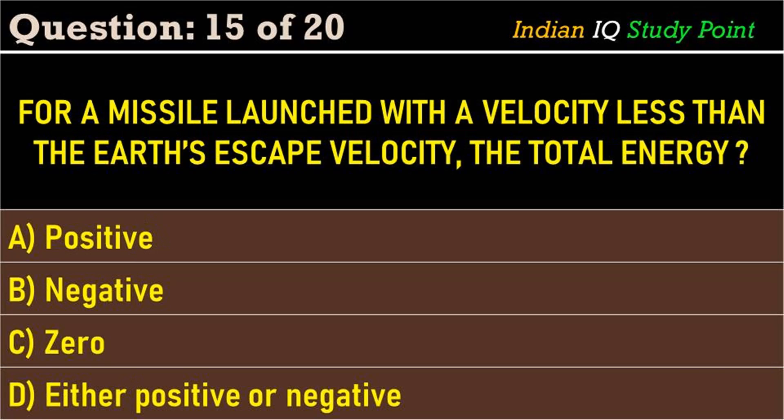Coming to the next question: for a missile launched with a velocity less than the escape velocity, the total energy is — option A: positive. Option B: negative. Option C: zero. Option D: either positive or negative. The correct answer is option B: negative.